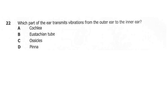Question 22. Which part of the ear transmits vibrations from the outer ear to the inner ear? A: cochlea. B: Eustachian tube. C: ossicles. D: tympanum. The correct answer here is C, the ossicles. The ossicles form a sound bridge which carries information from the eardrum to the oval window, acting as a transmission between the outer ear and the inner ear.